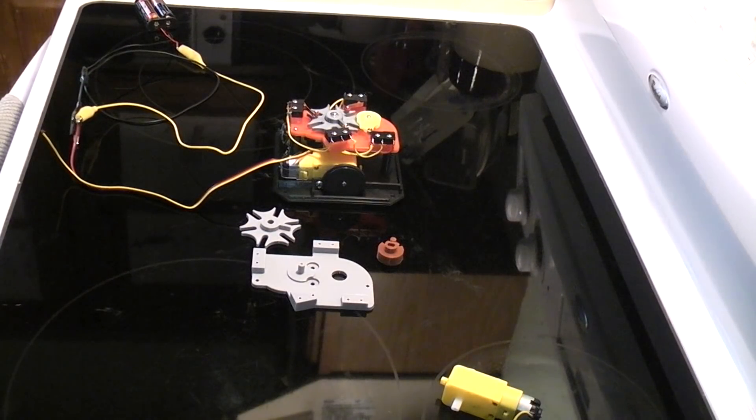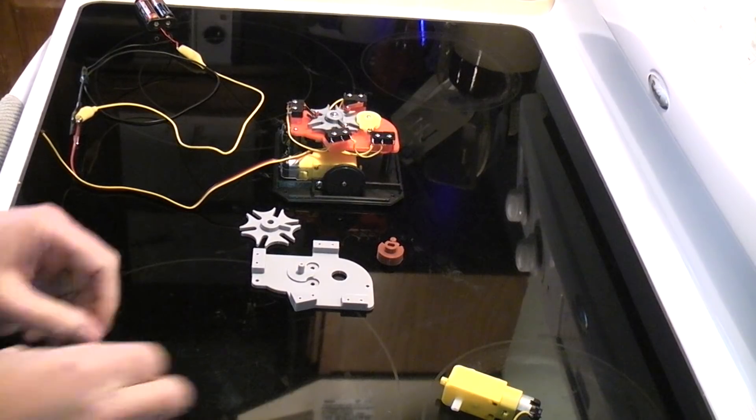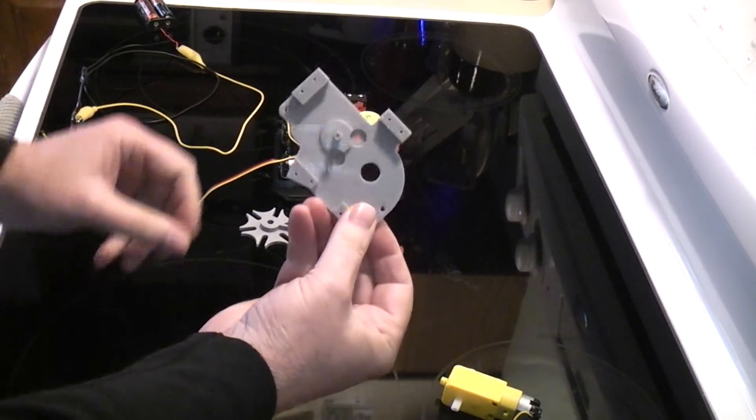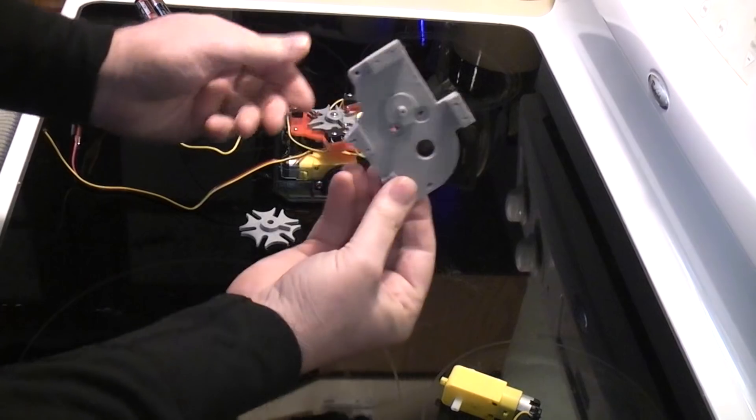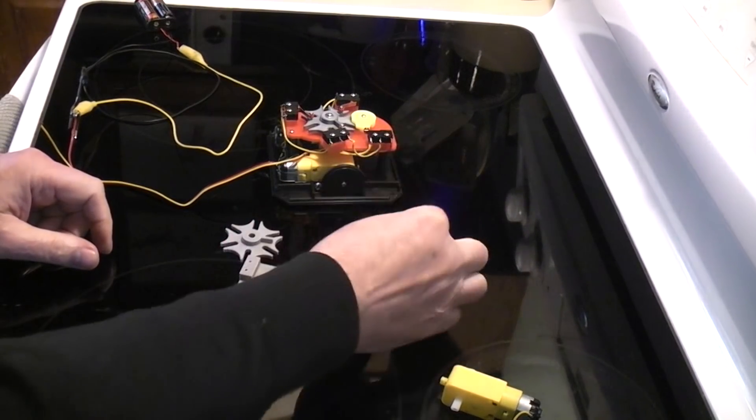Okay, what we're going to put together this time is a six step Geneva sequencer. Basically there's three parts you print out: this mainframe plate, this Geneva part here, and this cam part.